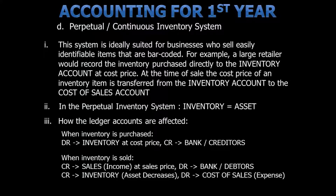Secondly, we will need to credit the inventory account. Remember, inventory is an asset, and assets decrease on the credit side. And then we will debit the cost of sales account — this is an expense, and expenses increase on the debit side.